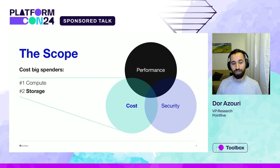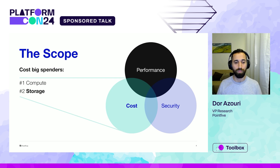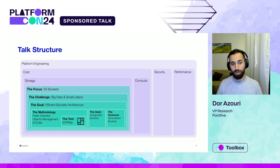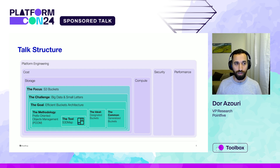The agenda for us is firstly to talk about the scope. As platform engineers, you probably have a lot on your head and most of the things you care about fall into three categories: performance, security, and cost. If we drill down into cost, the two main big spenders in the cloud are compute and storage. We will understand the focus — why are we focusing on S3 buckets — understand the challenge when trying to optimize cost, set how a solution should look for finding the efficient bucket architecture, and talk about the different methodologies accompanied by the tool we are going to present.